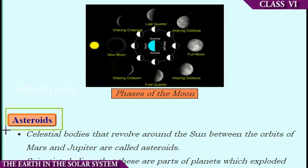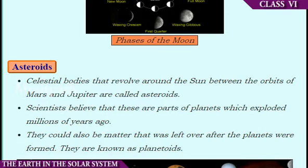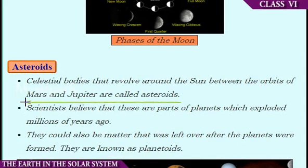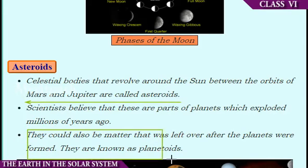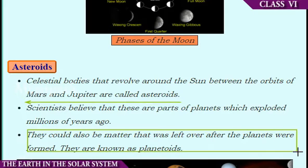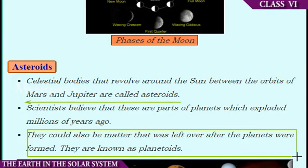Next come asteroids. There are numerous tiny bodies which move around the Sun. These are present between the orbits of Mars and Jupiter and are called asteroids. There could also be matter that was left over after the planets were formed, which are called planetoids.